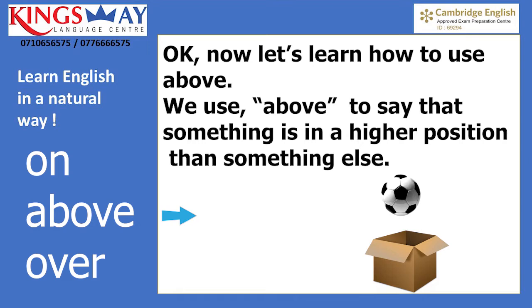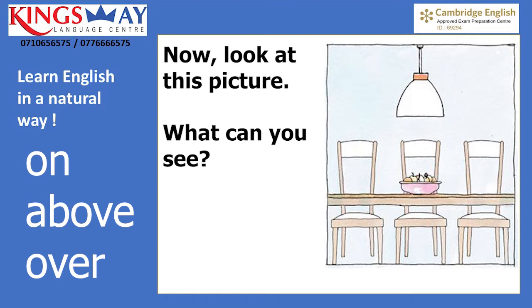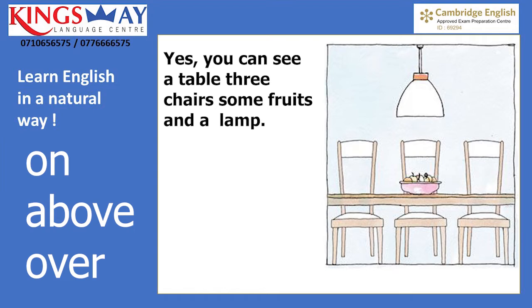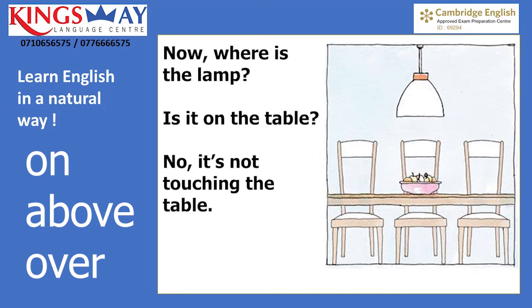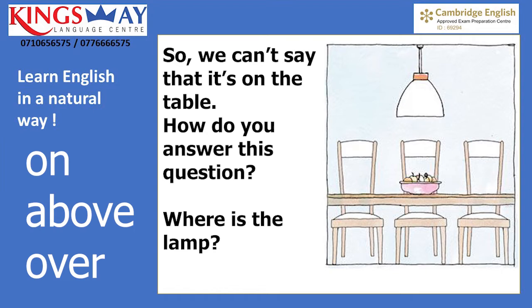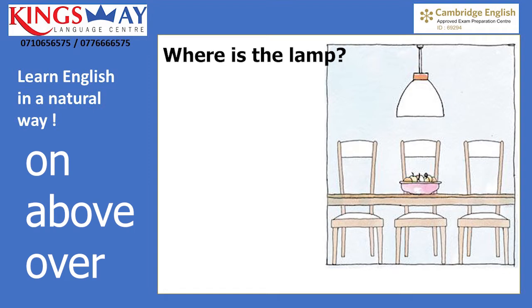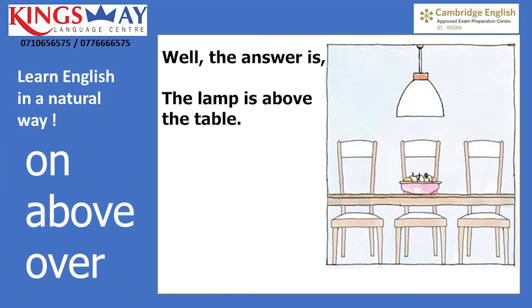Now let's learn how to use 'above.' We use 'above' to say that something is in a higher position than something else. Look at this picture. What can you see? You can see a table, three chairs, some fruits, and a lamp. Where is the lamp? Is it on the table? No, it's not touching the table, so we can't say it's on the table. The answer is: the lamp is above the table.